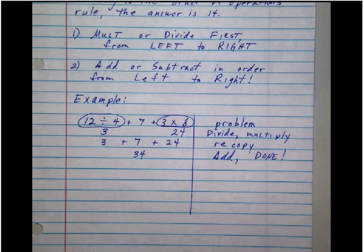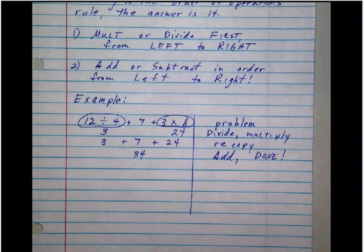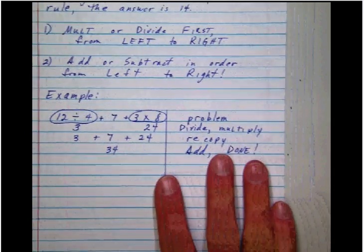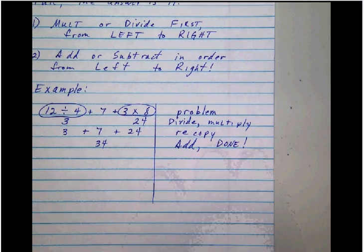Always multiply or divide first in the order in which they occur left to right. Then after you do that, add or subtract from left to right. I worked out a problem here step by step and I will use these set of notes here to go through and do the problem that we have.